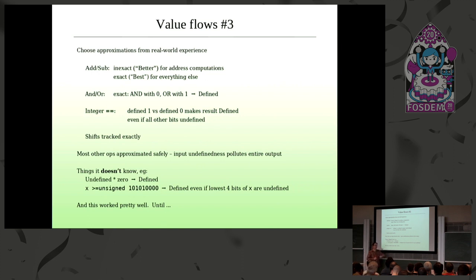Everything else is approximated. So basically we say that any input undefined values produce a completely undefined output value. And that's fine. But you notice also there are many, many examples, many ways which it's inexact and could easily be confused. So it doesn't know that multiplying an undefined value by zero produces a defined value. But again, nobody really uses that in practice.